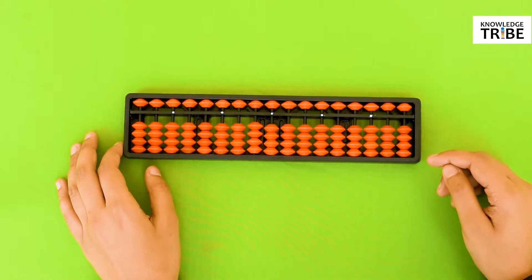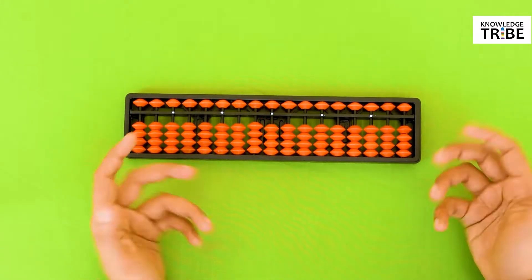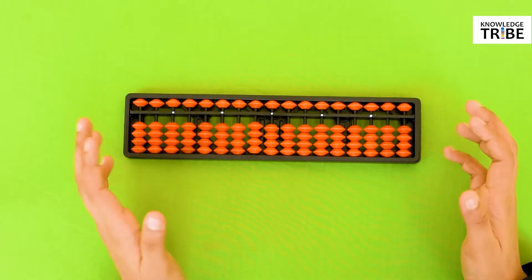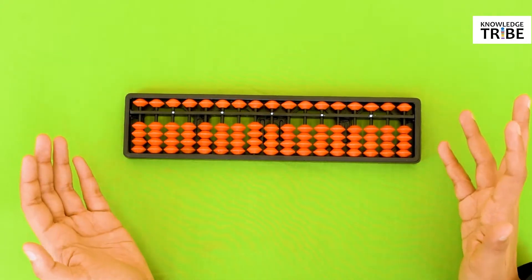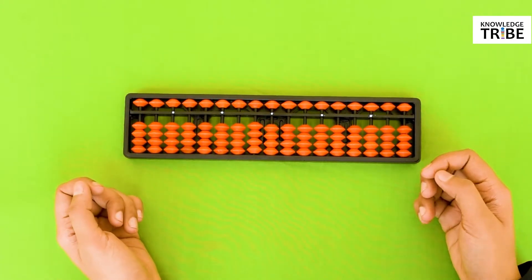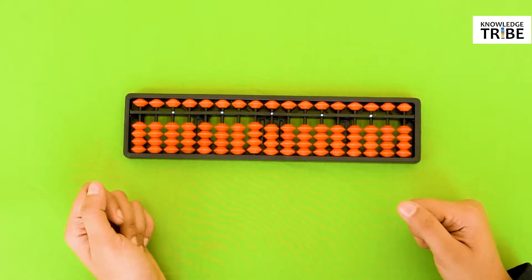We are starting with 1 plus 1. How do you add 1 plus 1 on an abacus? Yes, I heard you. You know 1 plus 1 is equal to 2, but we have to do this with the beads on an abacus. Let's start.